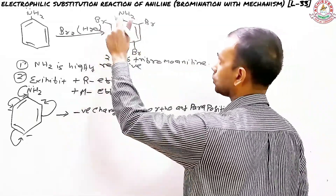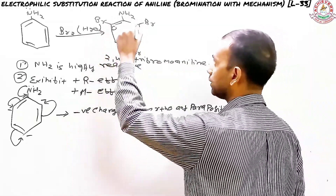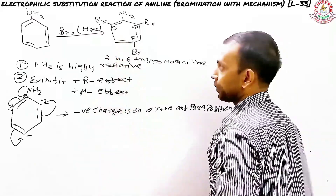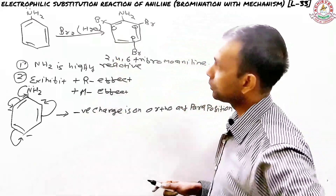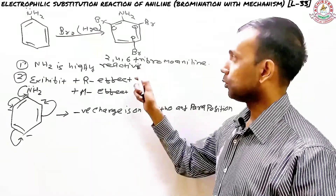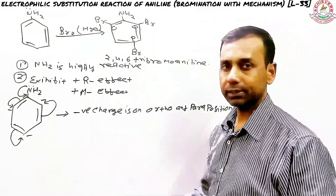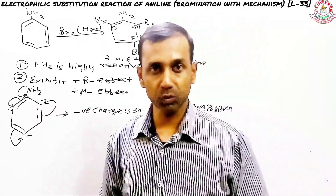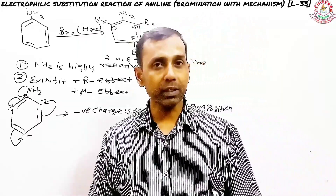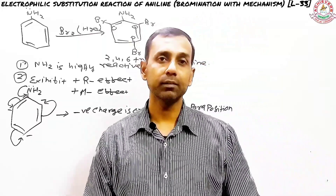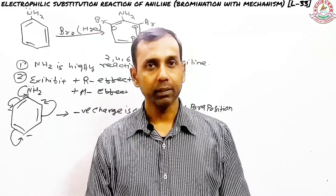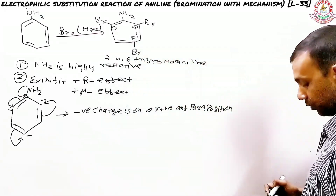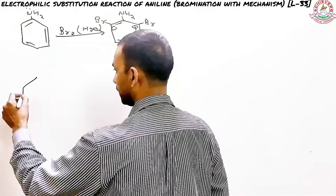There are two ortho positions and one para position. Because bromine water is used, bromine occupies all three — the two ortho and the one para. The question is: how can we get mono-substituted bromoaniline?